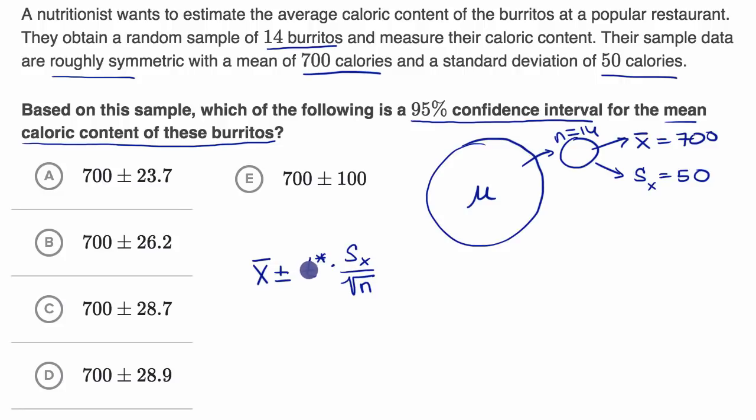The reason why we're using a t statistic is because we don't know the actual standard deviation for the population. If we knew the standard deviation for the population, we would use that instead of our sample standard deviation. And if we used sigma, which is a population parameter, then we could use a z statistic, we would use a z distribution. But since we're using this sample standard deviation, that's why we're using a t statistic.